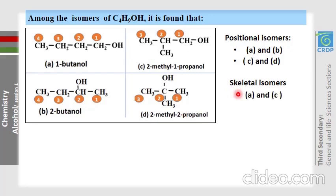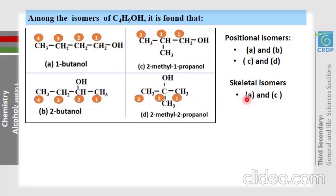Now for skeletal isomers: A and C are skeletal isomers. Both molecules have OH on carbon number 1, but they have different carbon arrangements. Because the carbon skeleton differs while the functional group position is the same, A and C are skeletal isomers.